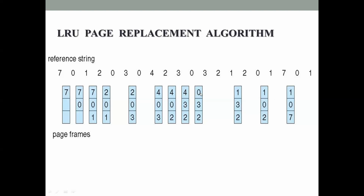Next page reference is 0 again. Memory has 4, 3, and 2, so it generates a page fault. We check past references: 3, 2, 4 - four has not been used for the longest period of time, so 4 is replaced with 0. Next, 3 is already in memory - no page fault. Next, 2 is also in memory - no page fault. Next, page reference is 1: not in memory. Checking past references: 2, 3, 0 - zero is referenced last, so zero is replaced with 1. Next, 2 is in memory - no page fault. For page reference 0: checking past references 2, 1, 3 - three has not been used for the longest period of time, so 3 is replaced with 0.